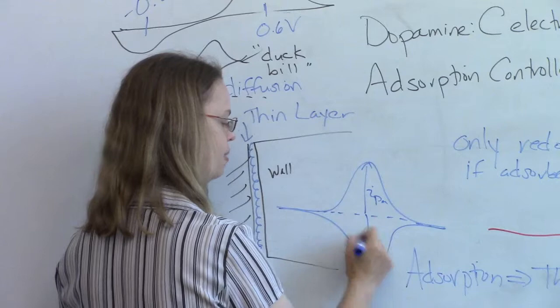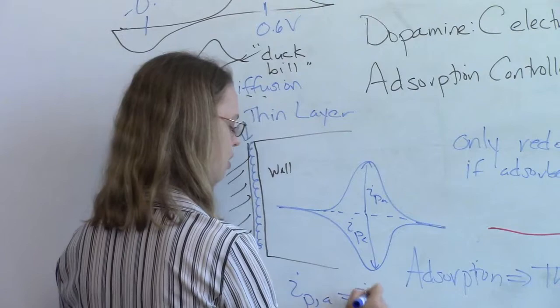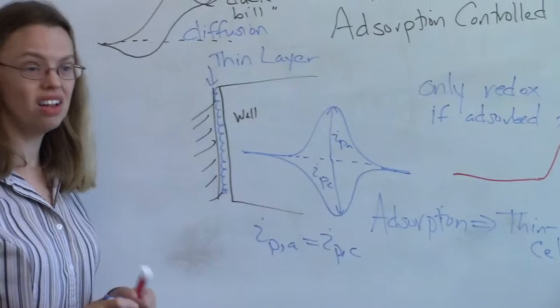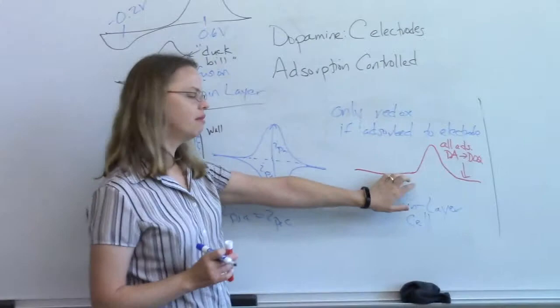You should get these perfectly symmetrical peaks. And if this was perfect, it's really easy to do IPA, IPC, and this is all perfect. IPA should equal IPC. So that's thin layer cell things, and all of the things for adsorption come off of that. But the shape is really characteristic.